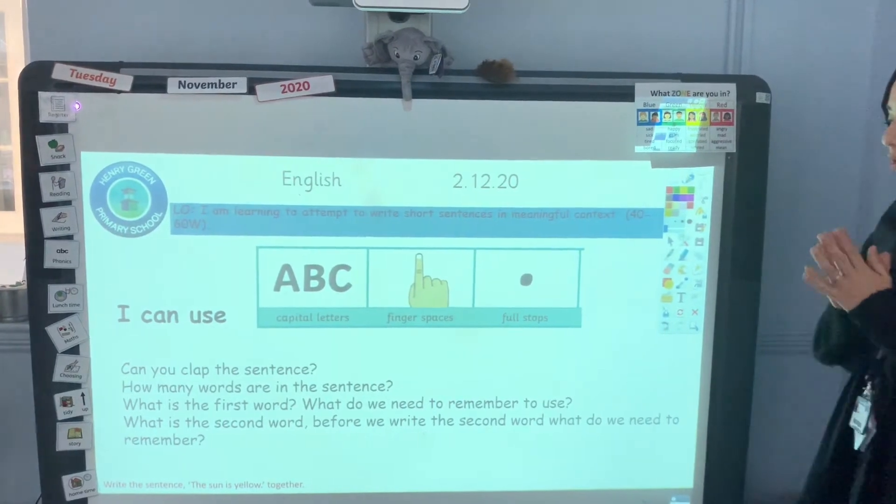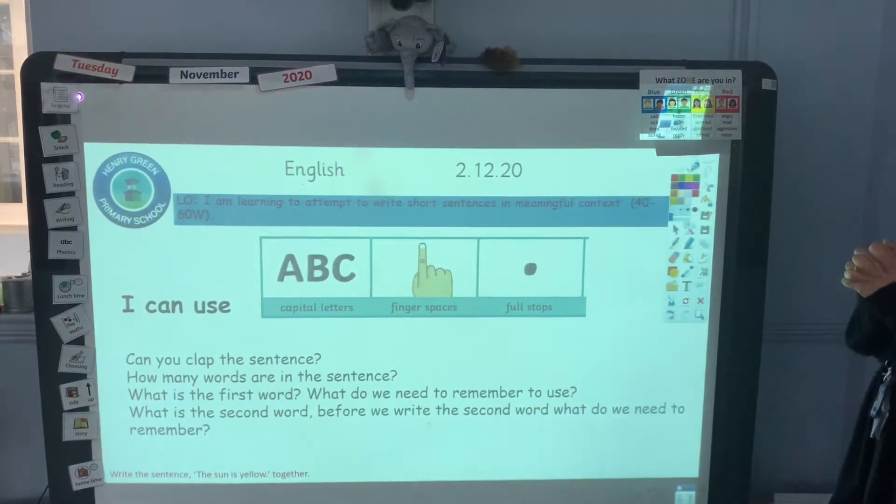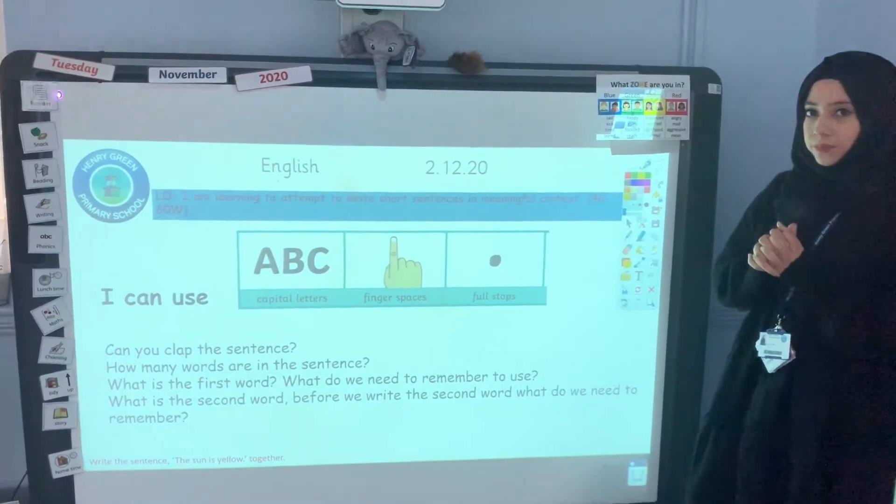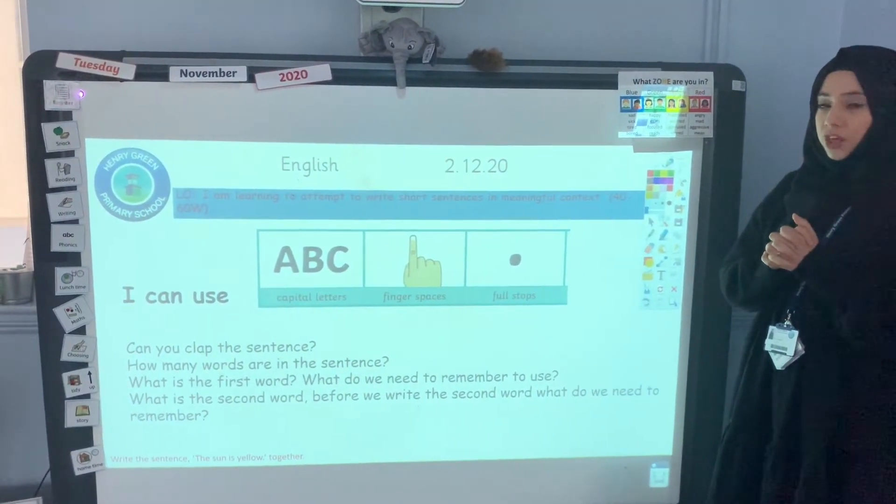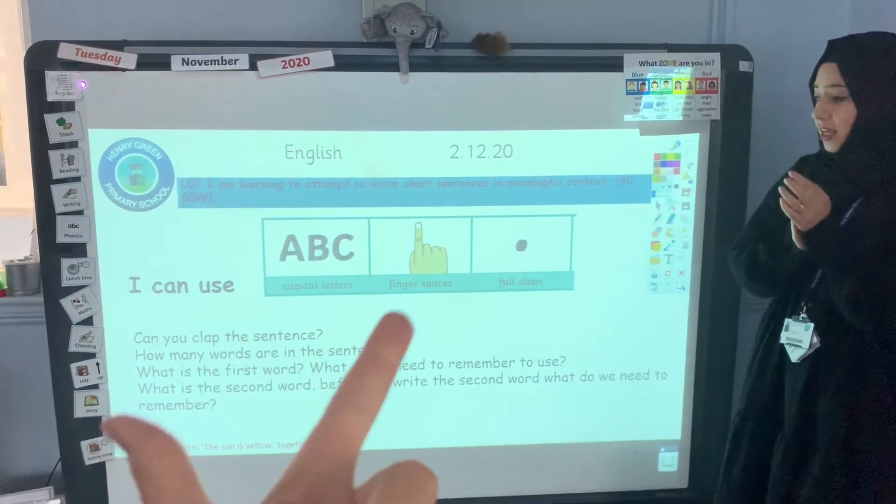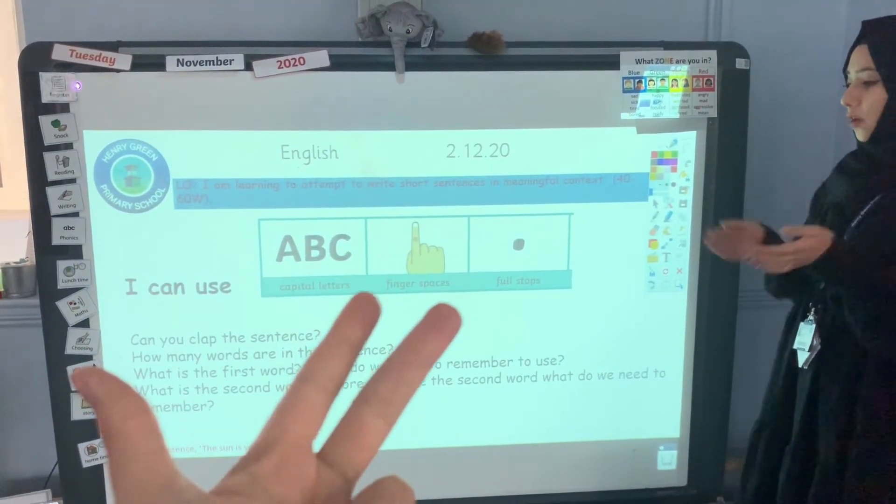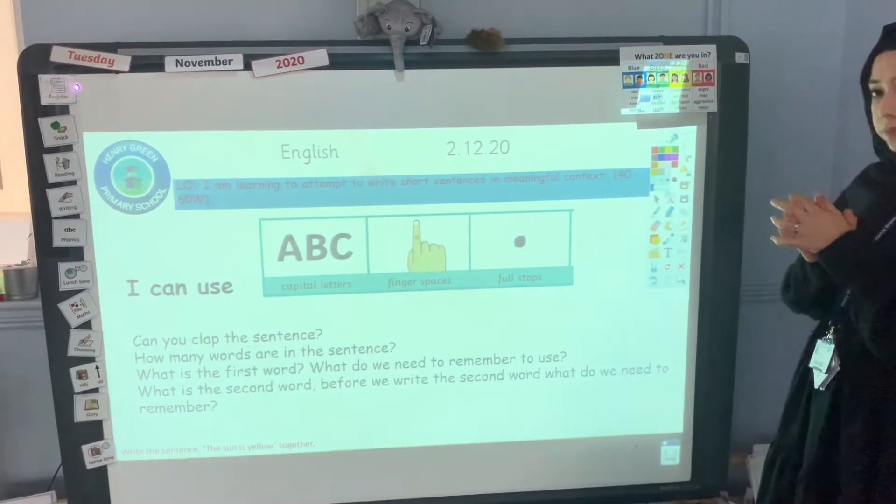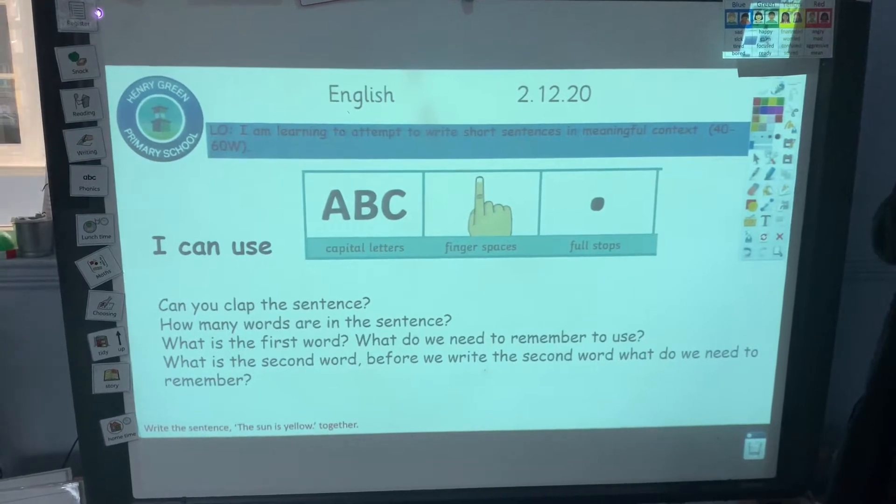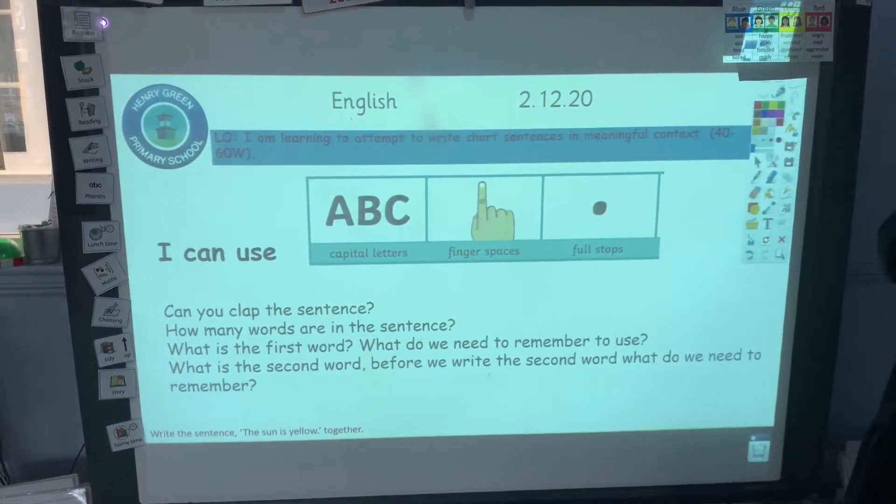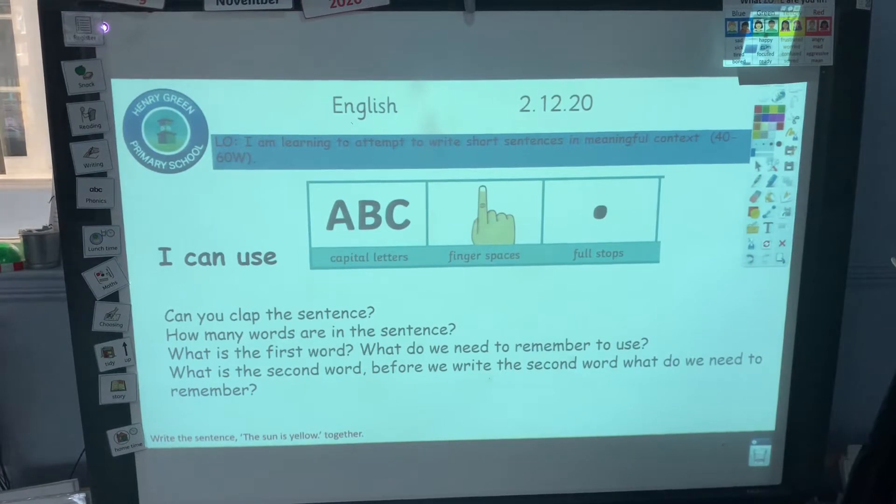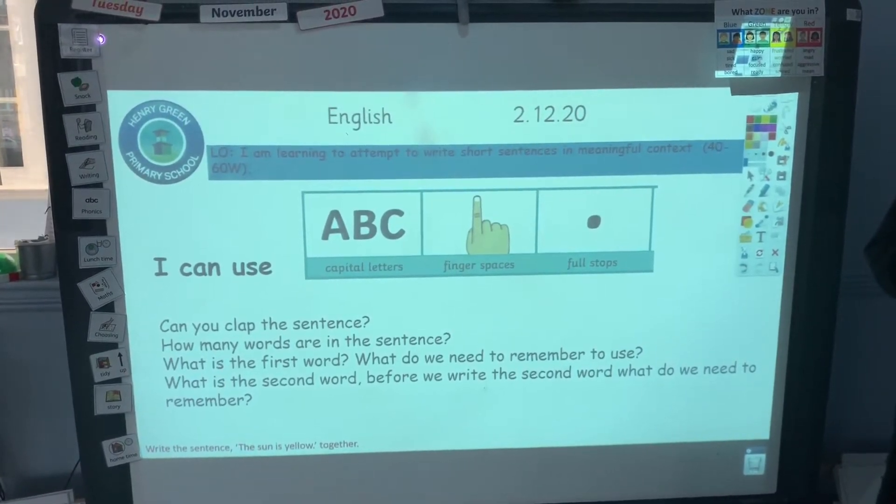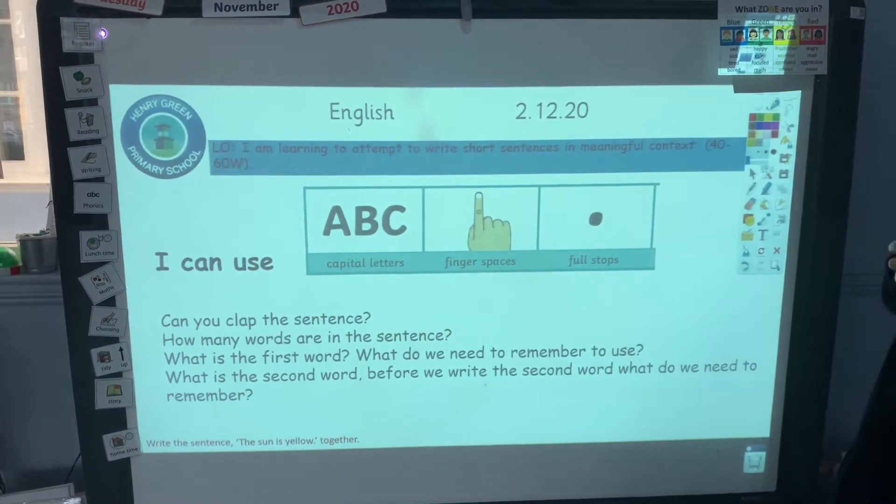We are going to write the sentence, the sun is yellow, together. Can you clap the sentence? The sun is yellow. How many words are in the sentence? Well done if you said four. There are four words in the sentence. What is the first word? Well done if you said the.